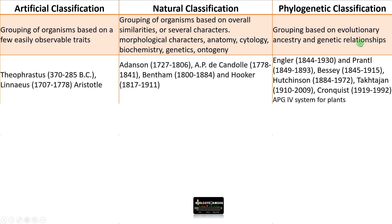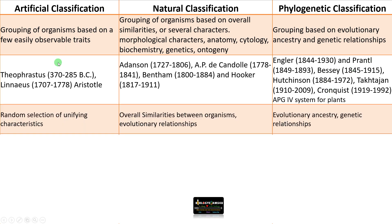Phylogenetic classification uses molecular data. Examples include the APG4 system, Engler and Prantl's classification, and Hutchinson's classification. In artificial classification, easily observable traits are randomly selected as unifying characteristics. In natural classification, overall similarities between organisms are taken into account and the maximum number of characters are considered.